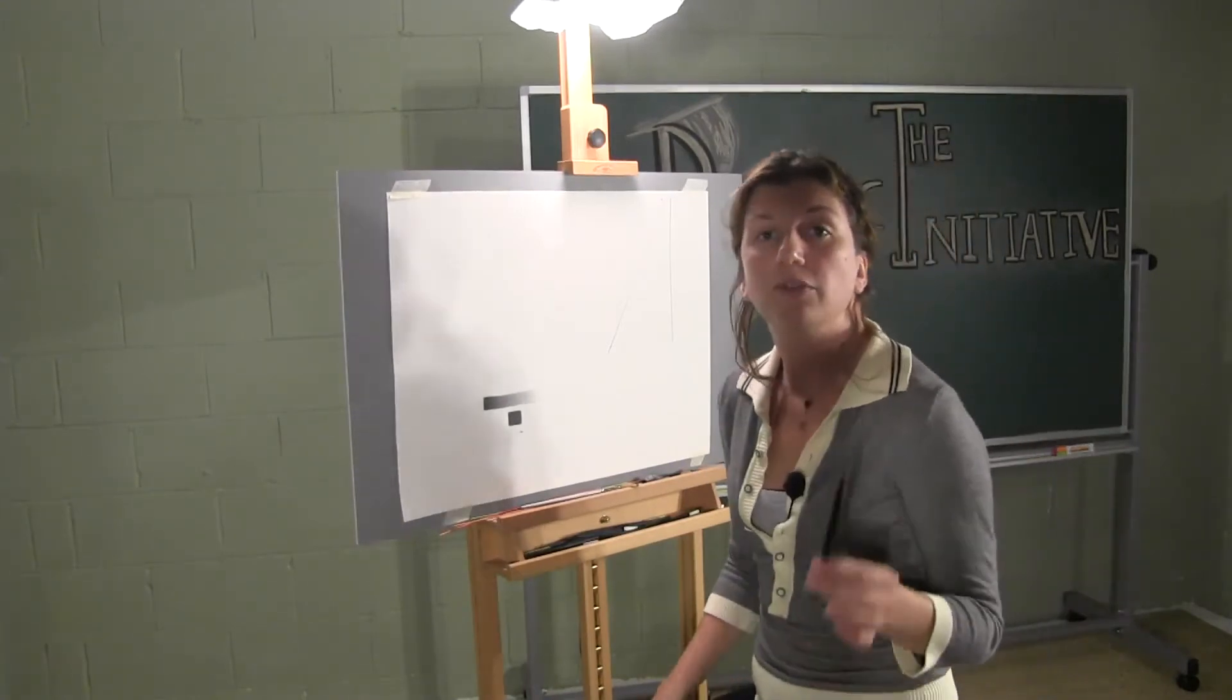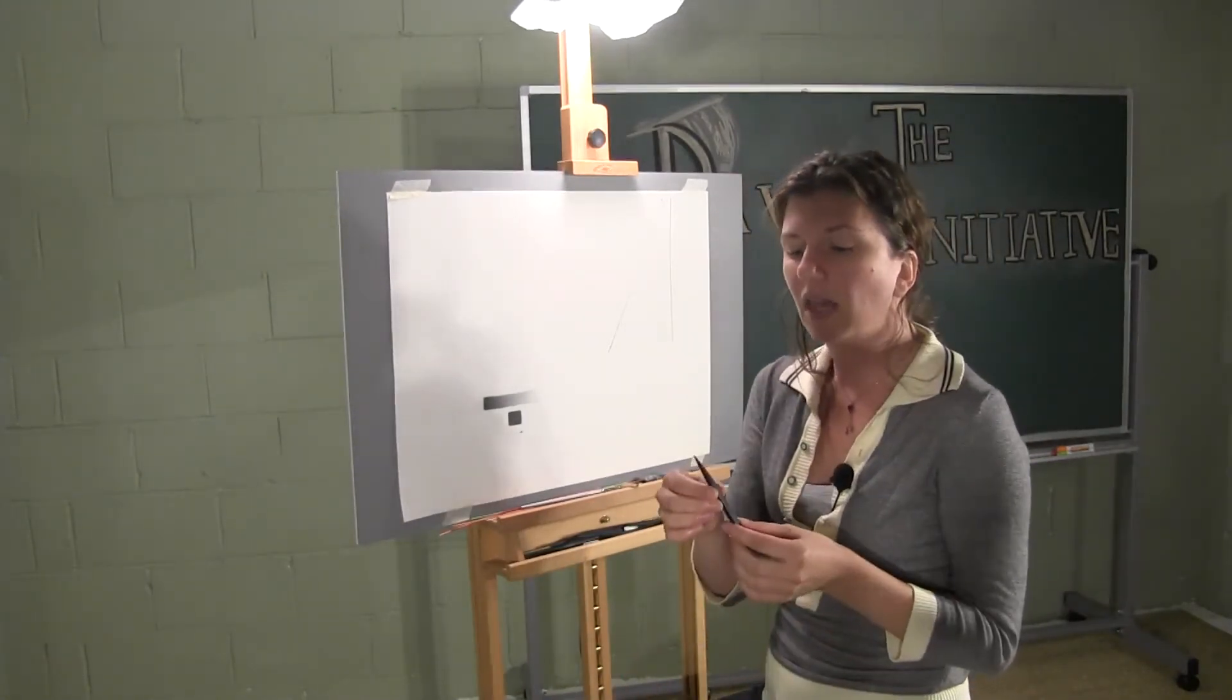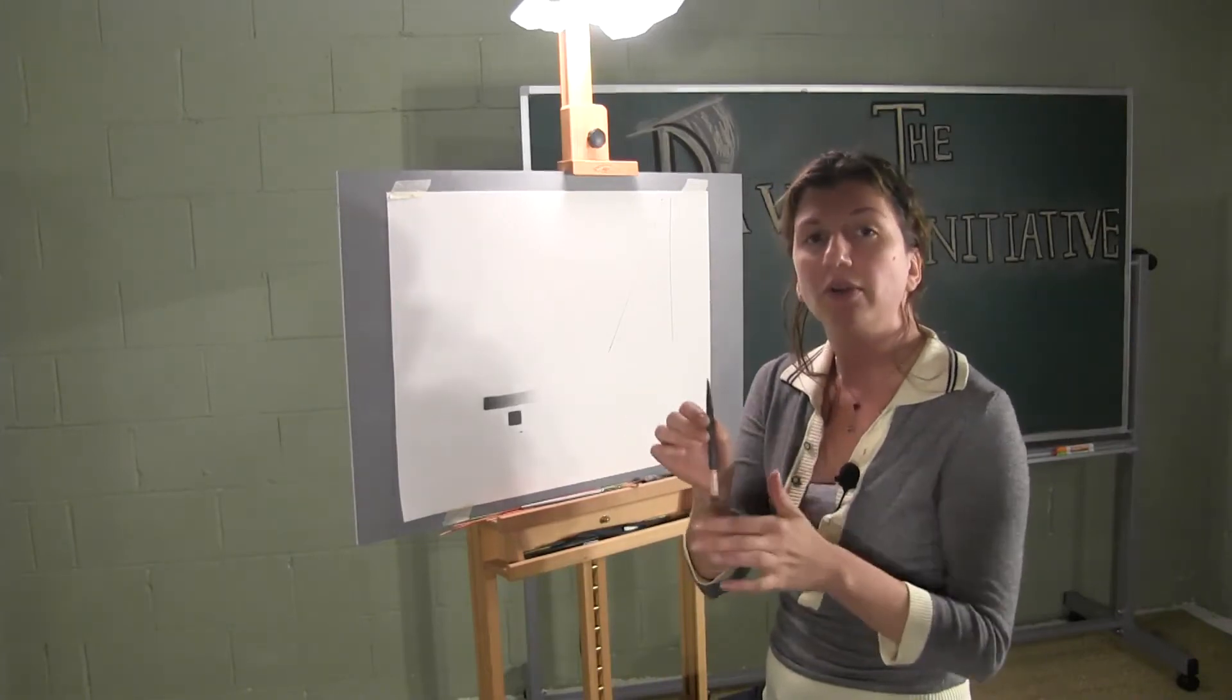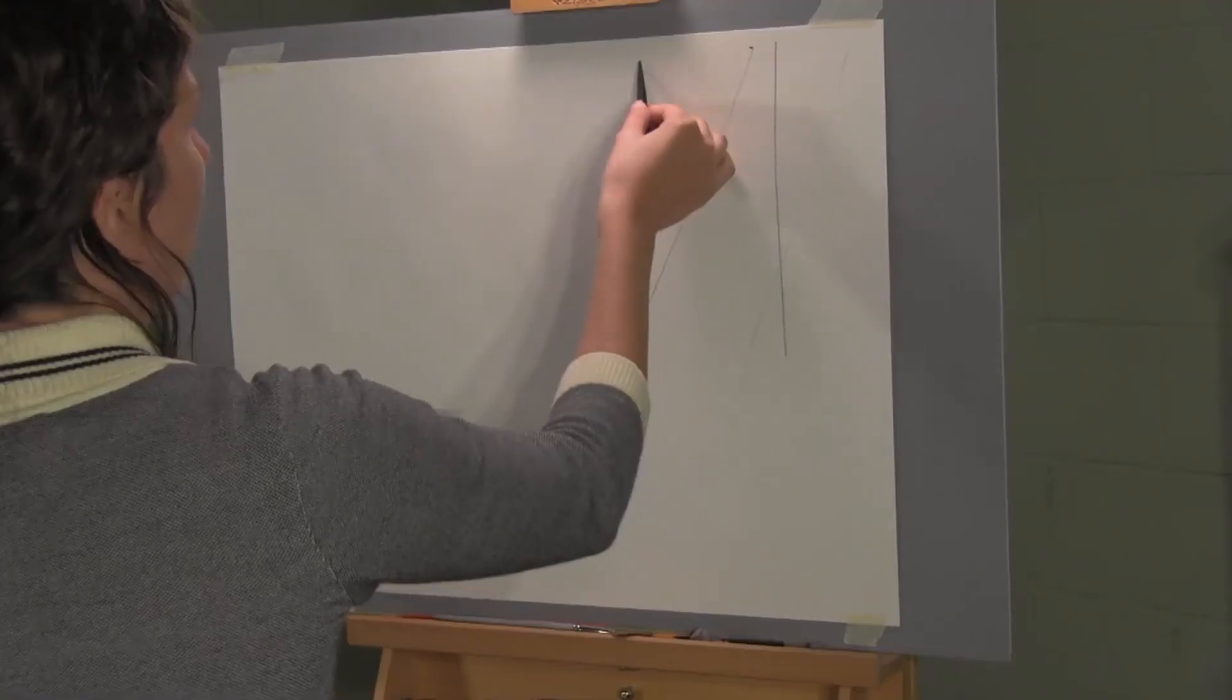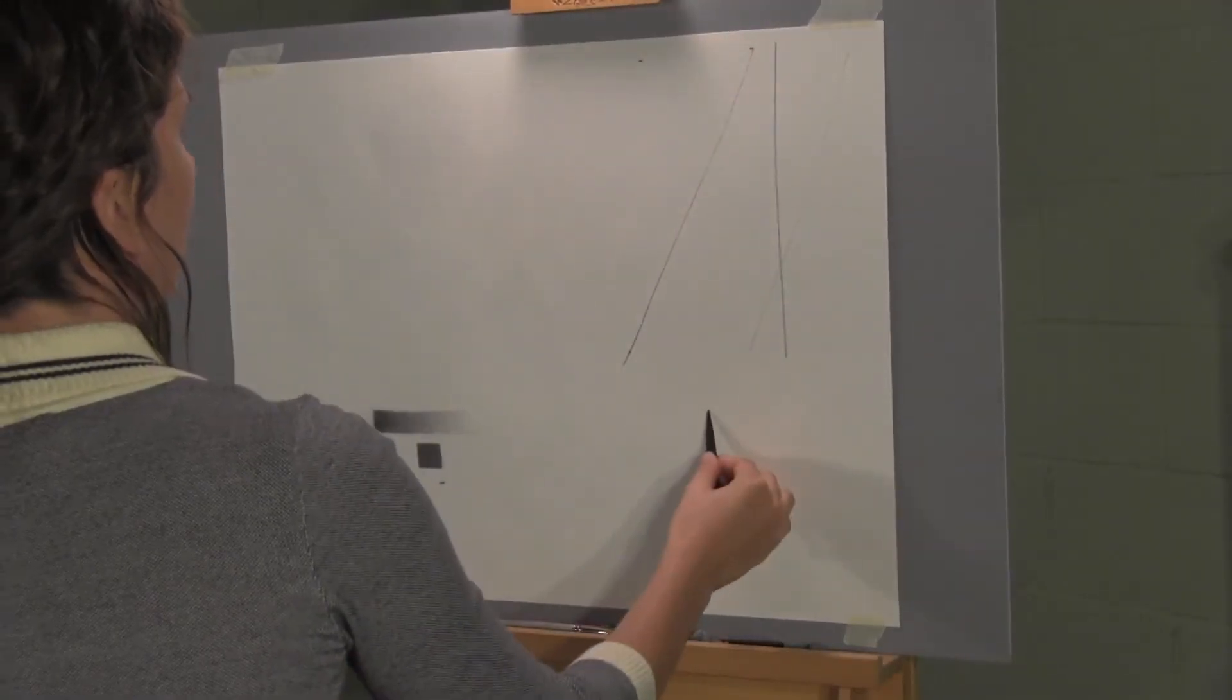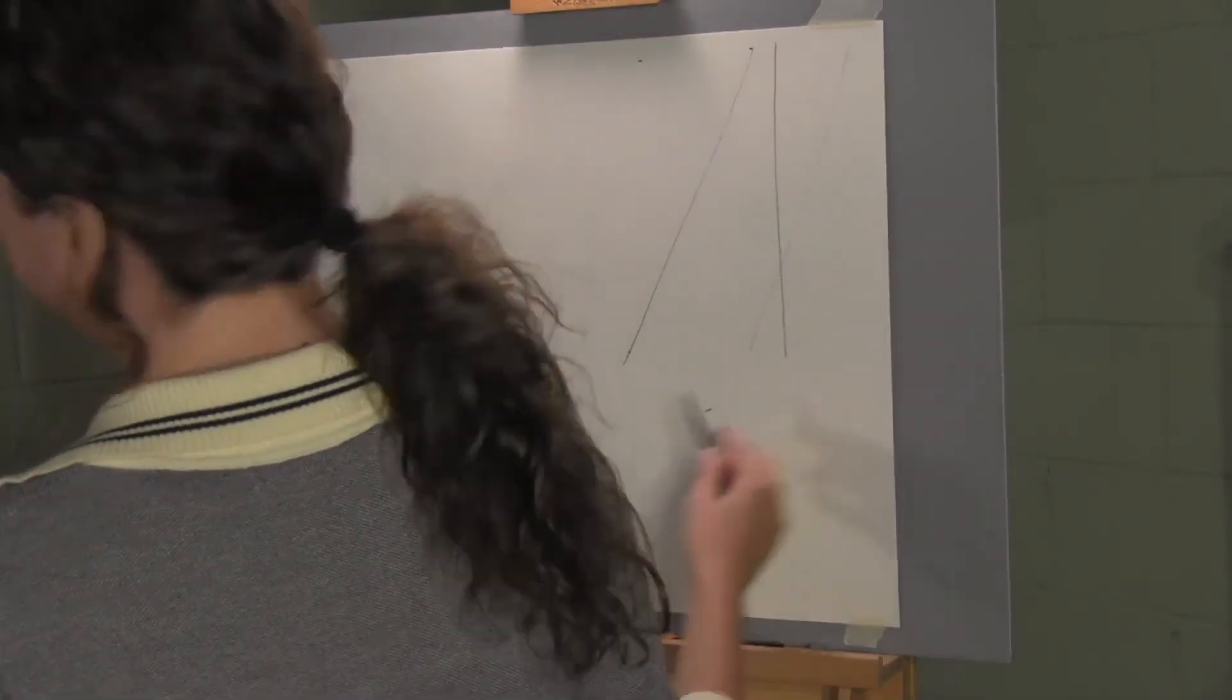Another thing that you'll notice that I've been doing while I've been drawing is that I'm aligning the length of my charcoal in the direction of the line where I want it to go. So if I wanted to draw a line from this point to this point...